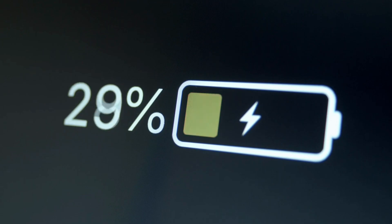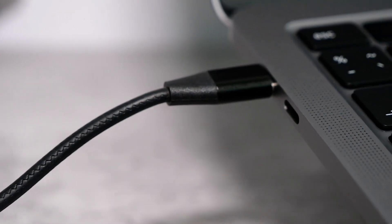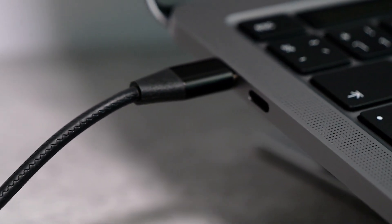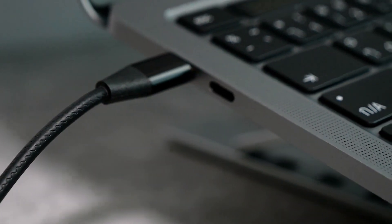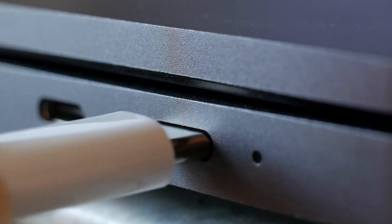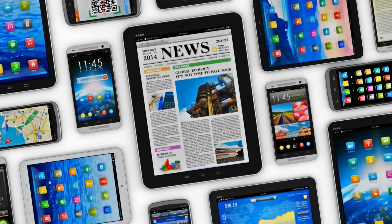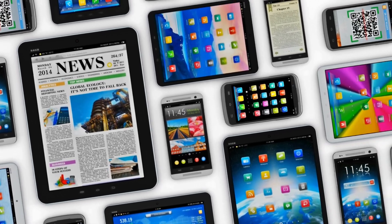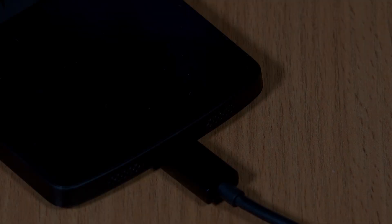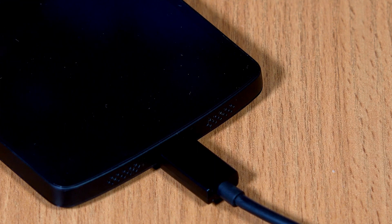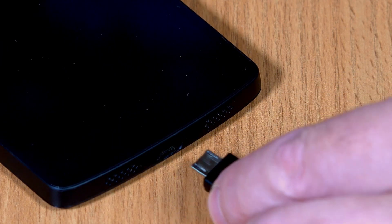Number four: power delivery. USB-C also shines in terms of power delivery. It can deliver more power to devices, allowing for faster charging and powering of high-demand devices like laptops and monitors. USB-C's power delivery capabilities are standardized, which means you can use the same charger for multiple devices. In contrast, micro USB has more limited power delivery capabilities and may not provide sufficient power for charging certain devices.